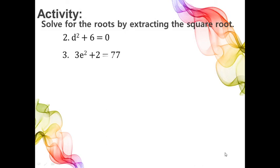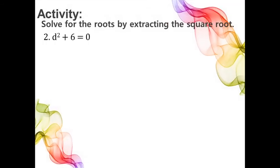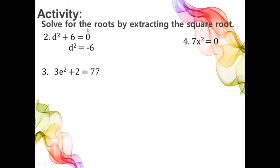Let us have the following equations. You are given 3 minutes to solve for the roots of the 4 equations. For number 2, we have d squared plus 6 equals 0. We transpose the constant term to the right side, so d squared equals negative 6. Since k is negative, the equation has no real roots.